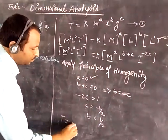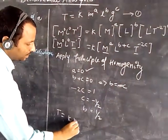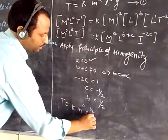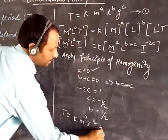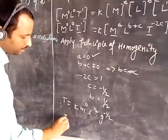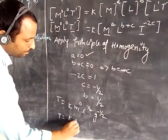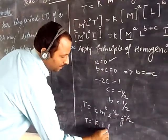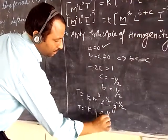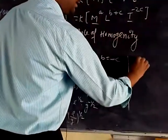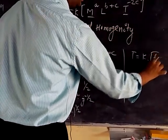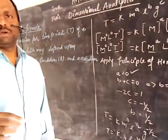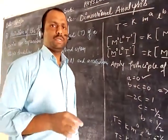So time period is equal to k, M to the power 0, L to the power b — where the value of b is 1 by 2 — and the value of c is minus half. M to the power 0 means it does not depend upon the mass. So we can write: time period equals k times l upon g to the power 1 by 2. So we got the formula: time period is equal to k times the square root of l upon g. Where k is a constant — we have learned that we cannot derive the value of constants by using the method of dimensions.